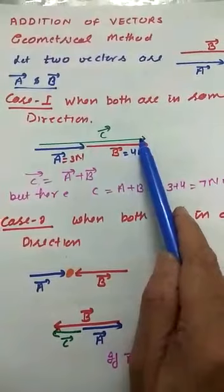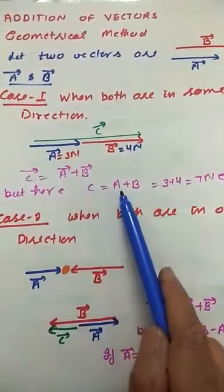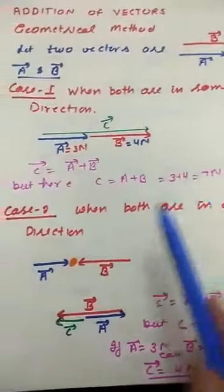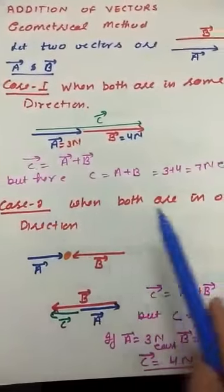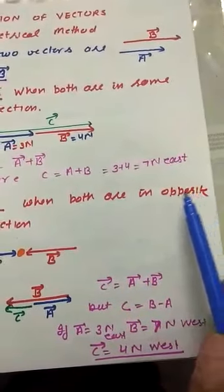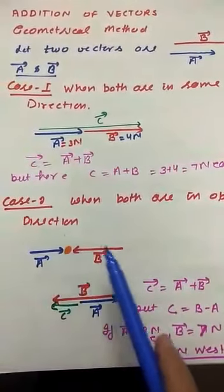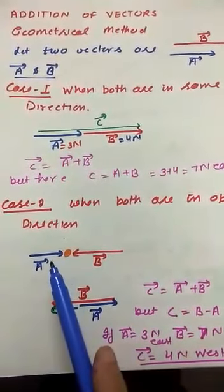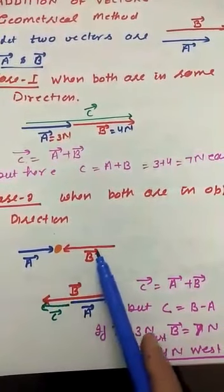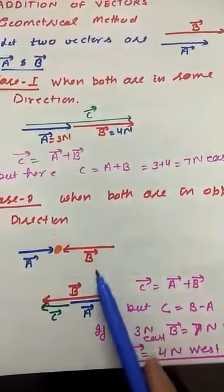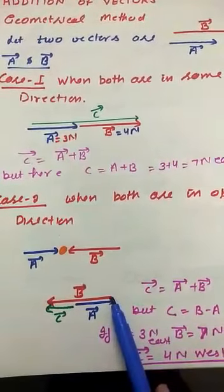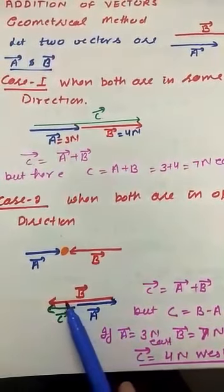Vector C equals vector A plus vector B. The length here is 7 cm, meaning vector C is 7 Newton. So when both vectors are in the same direction, the resultant equals the sum of their magnitudes. Now we take Case 2: both vectors are applied in opposite directions — like two students pushing a body in opposite directions.